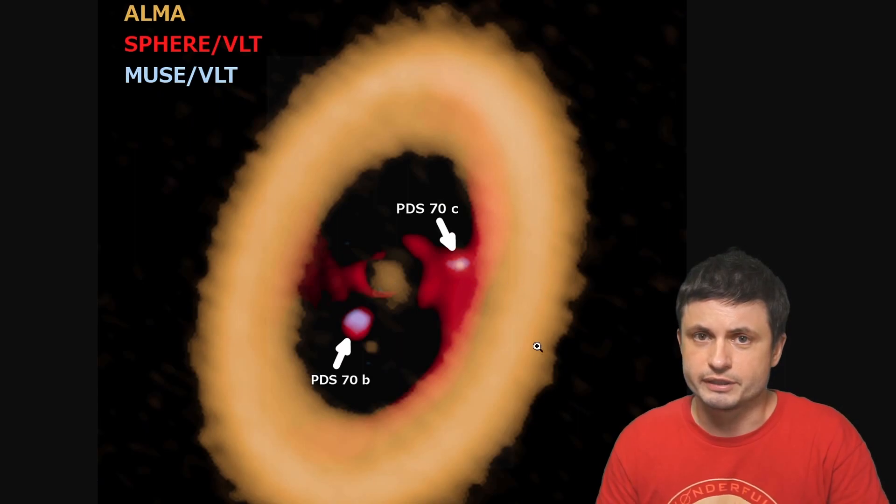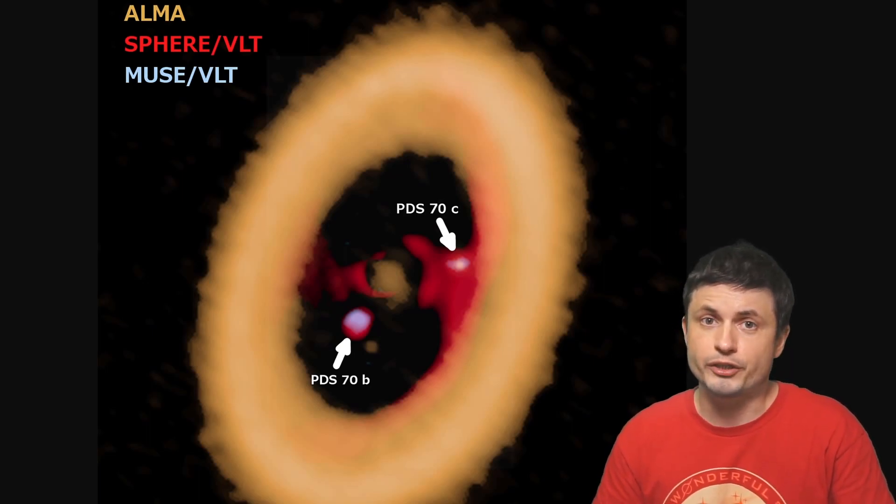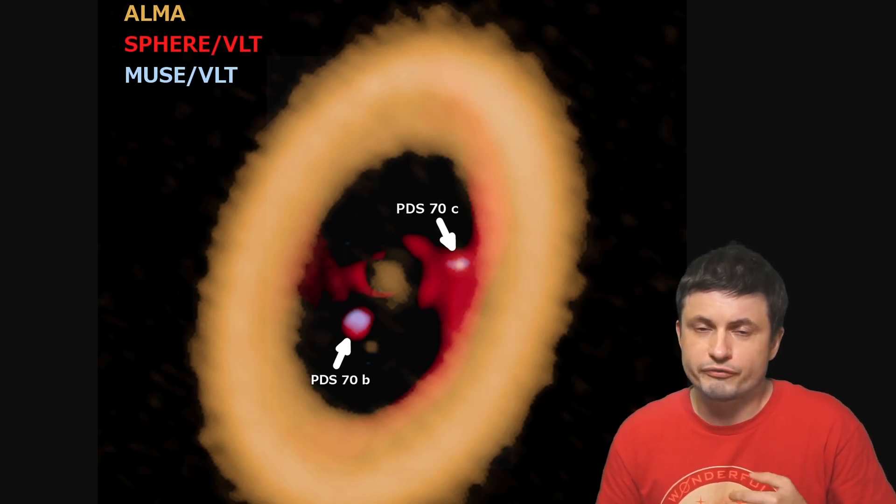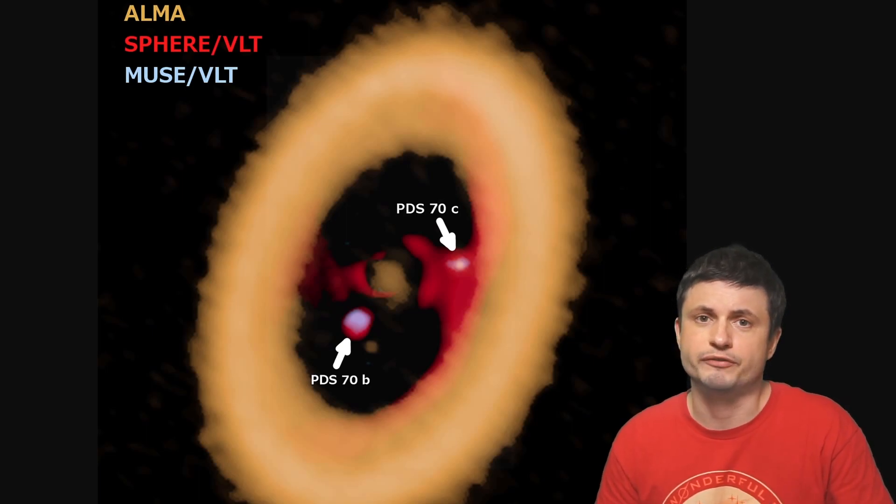But its neighbor PDS-70C, that's the planet that's about four and a half masses of Jupiter and is slightly farther away at 30 astronomical units from the star. The total radius of the disk including this really thick part is about 140 AU, which is about almost five times as far away as Neptune is from the sun.